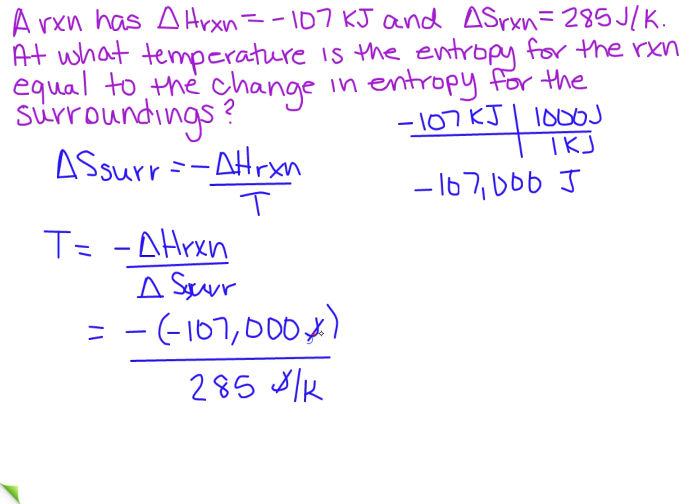So the joules will cancel. The kelvins become part of the numerator. I get 375.4386 but I only want how many significant figures? Well I've got 3 here and 3 here so I just need 3. So the final answer is going to be 375 kelvin.